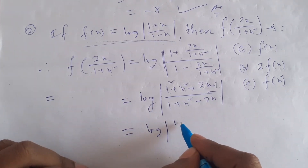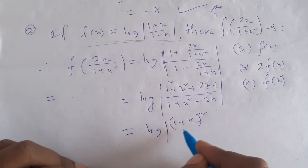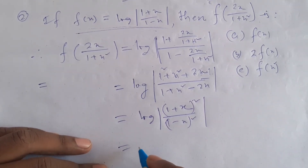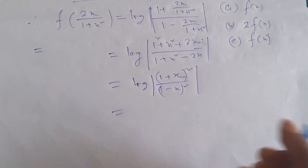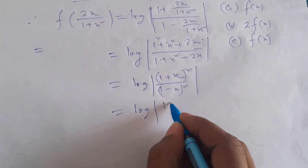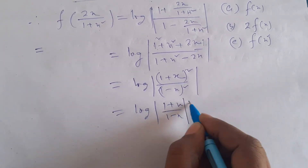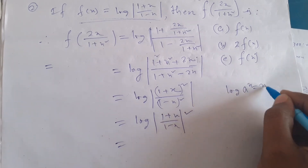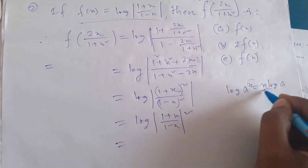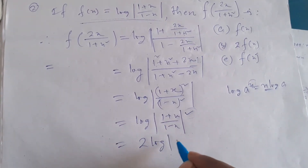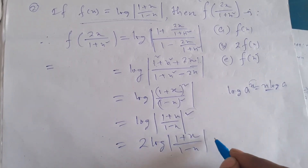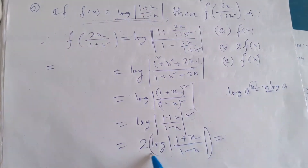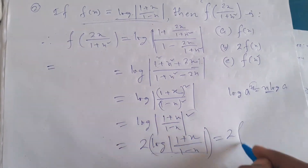We have to look at log of (1 plus x) by (1 minus x), whole squared. This whole square gives us the whole square. Now we use log a to the n, which is equal to n log a. So we look at the power of 2, giving us 2 into f of x.